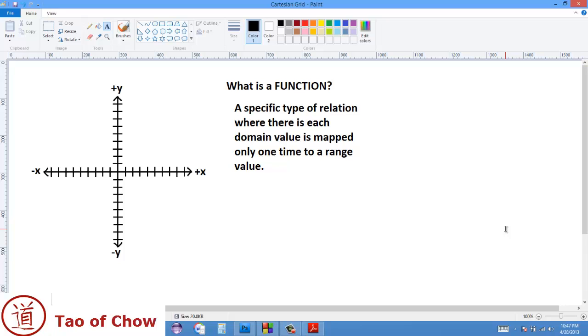Now, this might seem kind of complicated, but it's really not. And what it means is that for every spot along the x-axis, there's only one y-axis point. And it might be easier to demonstrate just from using an example.